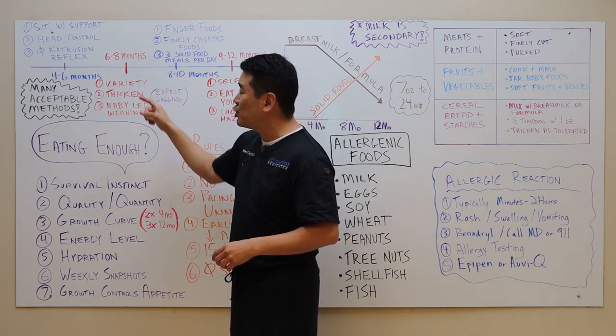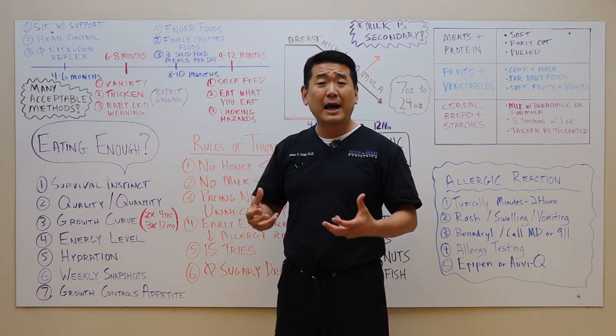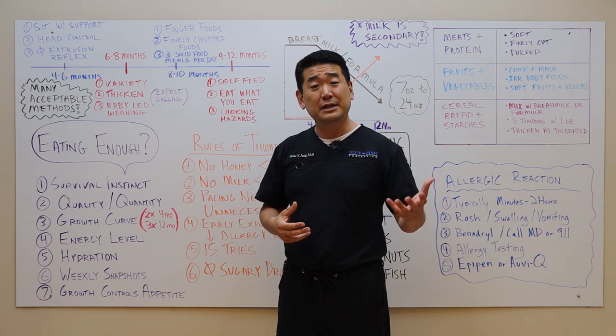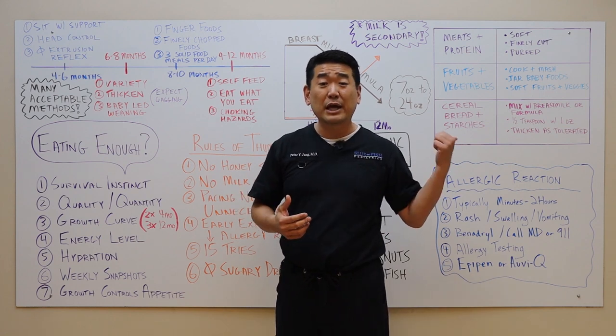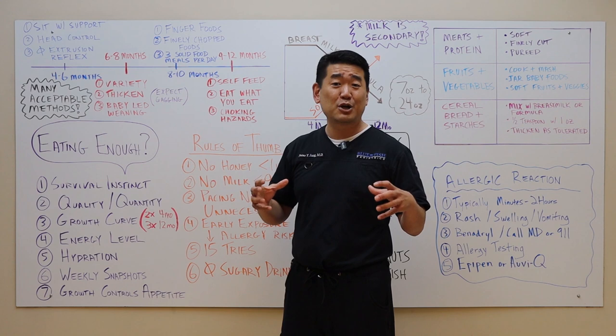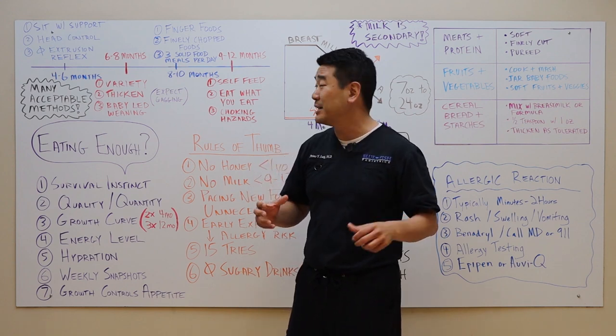When you meet these three criteria, you know your baby is ready to start solid foods. By six to eight months, you want to make sure that your baby is eating a wide variety of foods. They should be eating meats and fruits and veggies and cereal. Variety is key to make sure that they get a nutritious, well-balanced diet.